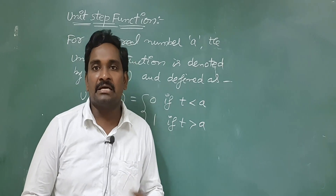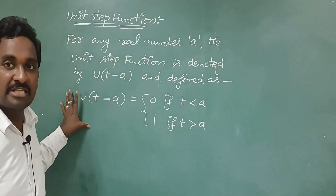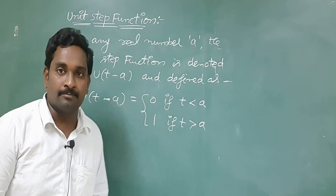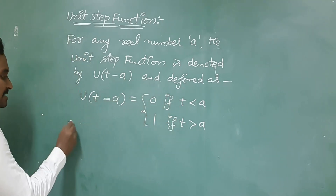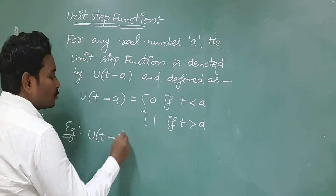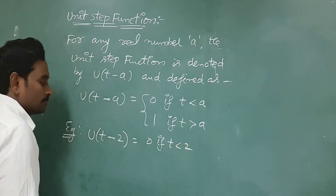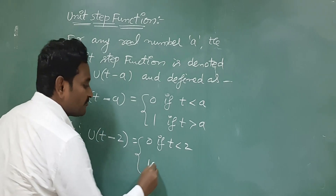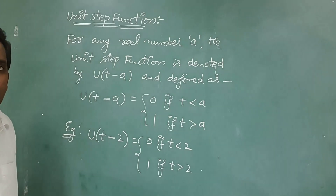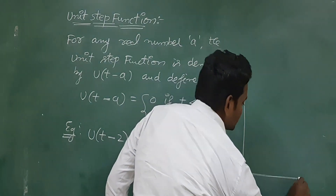In many electrical circuits, the form of the wave is specified for some time t; that's why in such cases we can use this type of unit step function. For example, u(t - 2) equals 0 if t is less than 2, and equals 1 if t is greater than 2.